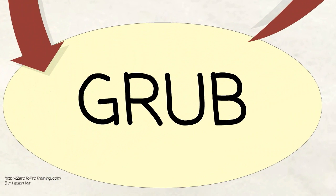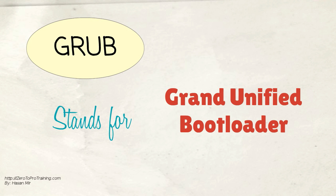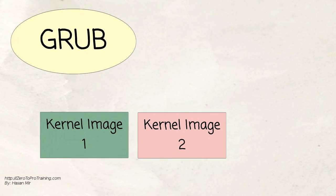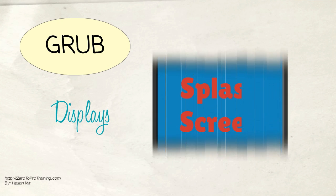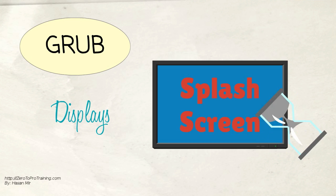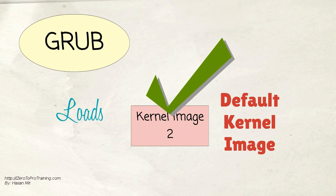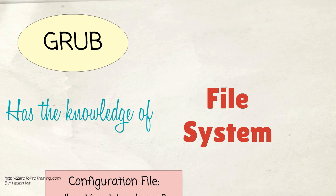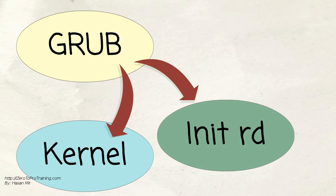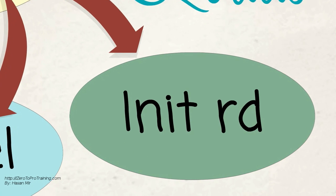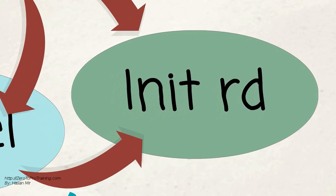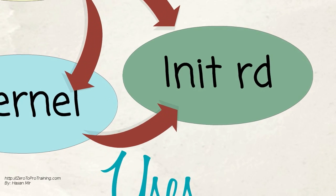Now let's talk about GRUB. GRUB stands for Grand Unified Bootloader. If you have multiple kernel images installed, you can choose which one to execute. It displays a splash screen and waits for a few seconds. If nothing is entered, it loads the default kernel image as specified in the GRUB configuration file. GRUB has knowledge of the filesystem. The configuration file is called grub.conf. In short, GRUB loads and executes the kernel and initial RAM disk images. Initrd stands for initial RAM disk, which is used by the kernel as a temporary root filesystem until the kernel is booted and the real root filesystem is mounted.